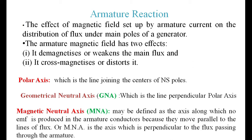The effect of this armature flux on the main flux is what we call armature reaction. The armature magnetic field has two main effects: first, it demagnetizes — reducing the main flux produced by the field winding; and second, it cross-magnetizes or distorts the main flux, changing its distribution.